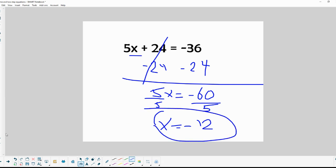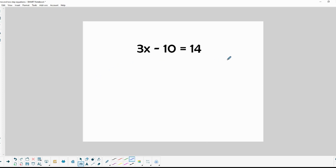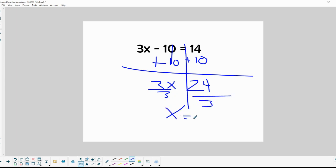Move on to the next problem. Oh, 3x minus 10 equals 14. So let's add 10 to both sides. Do you remember these from before? Have you seen these? So we get 3x equals, and on the other side of our equal sign, our Great Wall of China, we have 24. Divide by 3. And our final answer is x equals 8. Awesome.